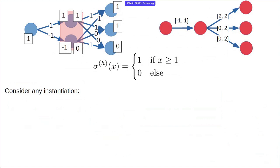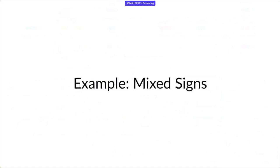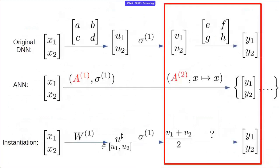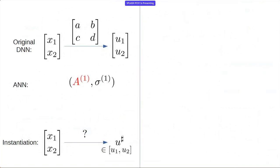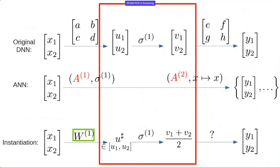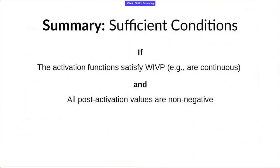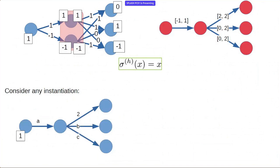Audience question about whether you could rewrite a network with an unsupported activation function into a different network that satisfies the required hypotheses. The speaker confirms: yes, that's exactly what's in the paper — there's a tool, possibly in the GitHub repo, that takes a concrete network and produces one with the same input-output behavior but with the required properties.